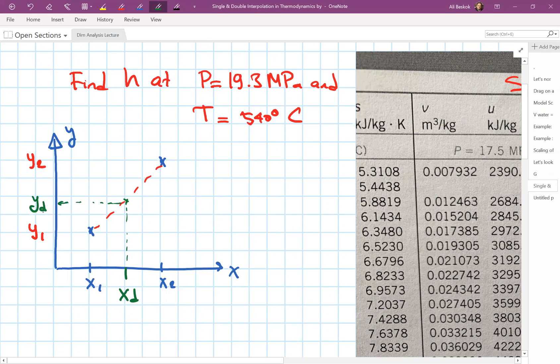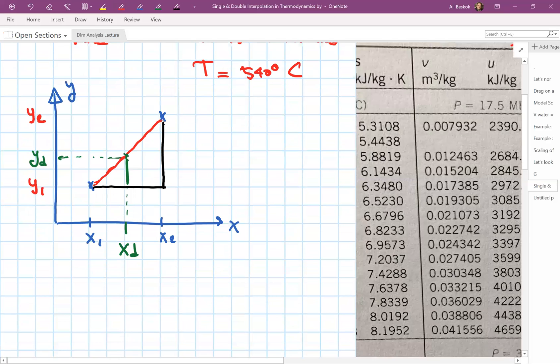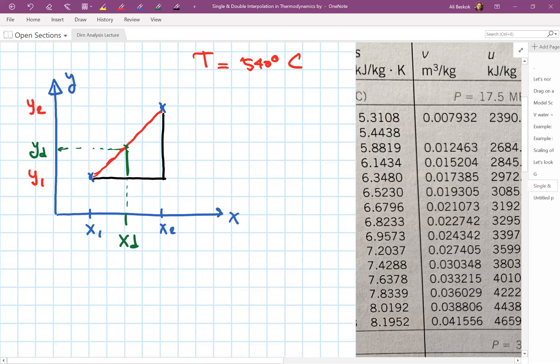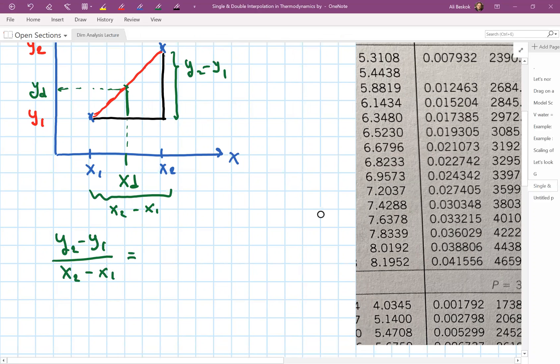If we go up this way, we'll be able to find the desired value of y, y sub d. You may see this as basically a similar triangles problem. After all, this is the triangle that we'll form. This distance here is y2 minus y1, and this distance is x2 minus x1. That together gives the slope of that line.